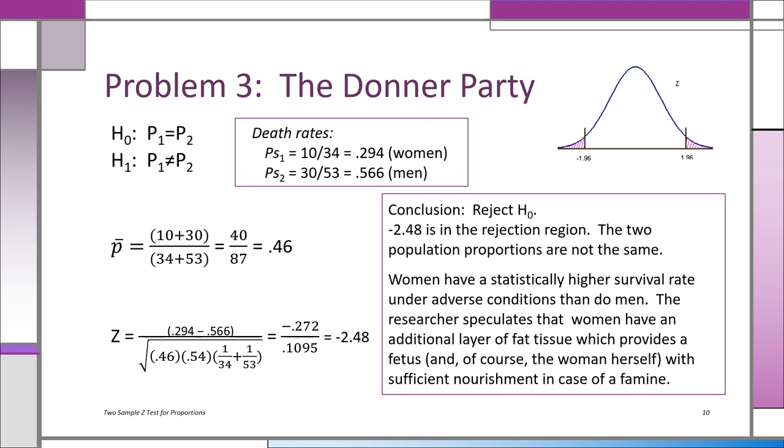Now we're going to do the problem. H0 is that P1 equals P2—there's no difference in death rates when there's no food. Men and women have the same survivability, if that's a word. And H1 is that P1 is not equal to P2. We pool it, pretend it's one group. Under H0 there's no difference, so we combine the men and the women. There are 40 deaths out of 87 people, which is 0.46. That's p bar—p bar is 0.46.